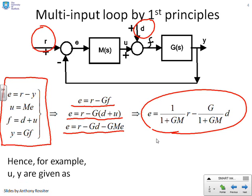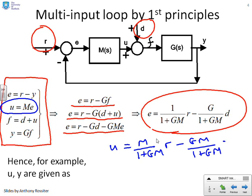So what next? We might want to find out what U and Y are. So let's do this next. Now in order to get U I'm just going to use this expression we already had up here. U equals ME. So I can write down almost by inspection U equals M over 1 plus GM into R minus GM over 1 plus GM into D.